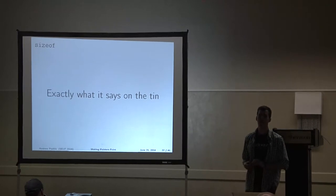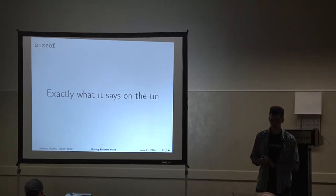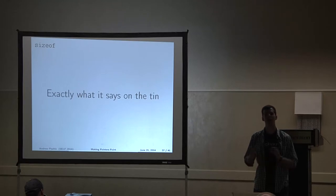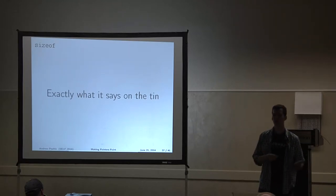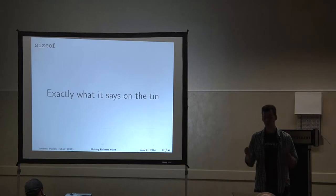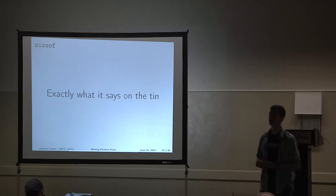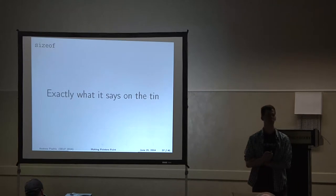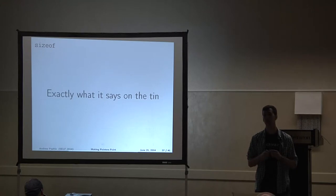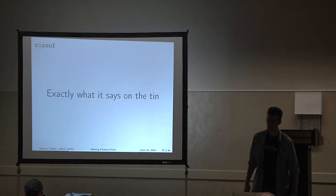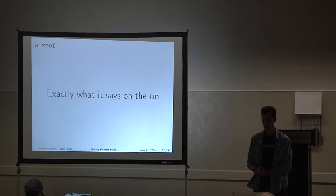When you get to memory allocation, you have to figure out how large things are, because you need to allocate a specific number of bytes for a specific number of things. To get how large things are, typically you would use the sizeof operator. It goes and happens to know ahead of time exactly what the size of types are — it just translates that to an unsigned integer at compile time.